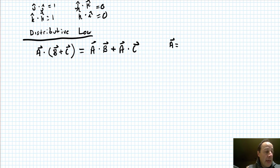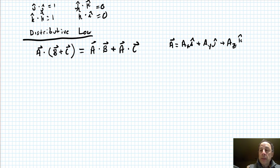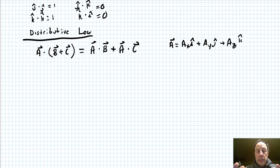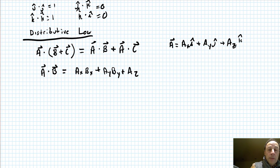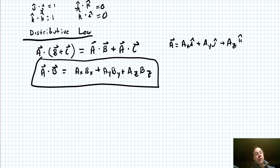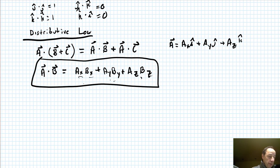Remembering that we can describe A as Ax·î + Ay·ĵ + Az·k̂, and that when you dot vectors only components in the same direction survive, A·B equals AxBx + AyBy + AzBz. You have three interactions, each in their own dimension — X, Y, Z — that sum together to form the dot product.